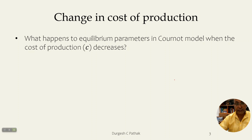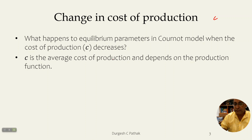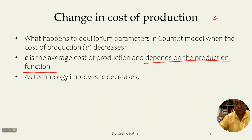The other variable that can change is C — the average and marginal cost of production, since there is no fixed cost. What happens when C decreases? Cost curves are derived from the production function, so when firms have better technology, the production function improves and costs are lower. So as technology improves, C decreases.